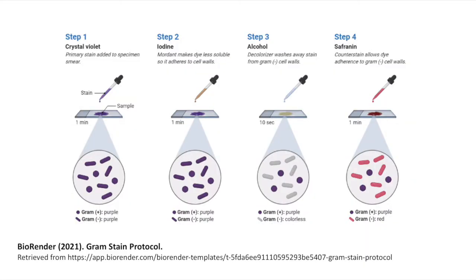Gram staining protocols are therefore designed to exploit this basic difference in cell wall structure. While you'll come across a wide variety of different protocols for Gram staining in textbooks and over the internet, the basic procedure is very similar to as laid out here — beginning with treatment with crystal violet, followed by treatment with iodine to stabilise the bound crystal violet, which also changes the colour to a deeper blue colour as we'll see later on.